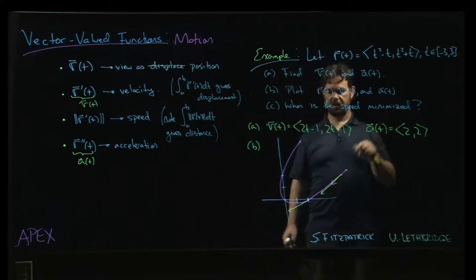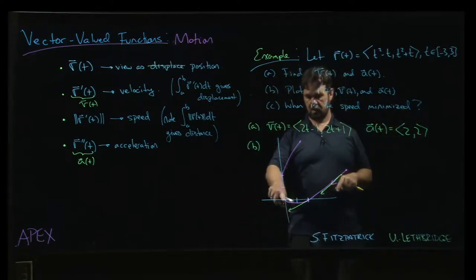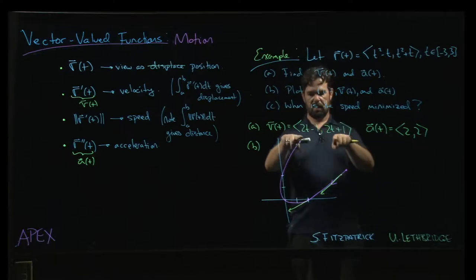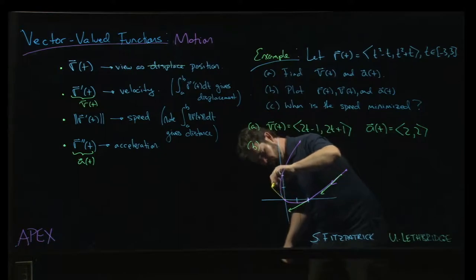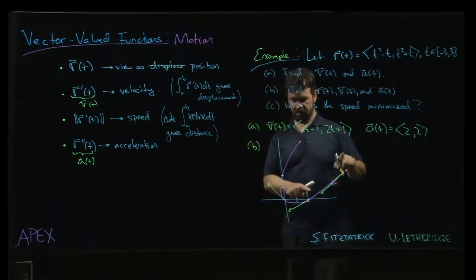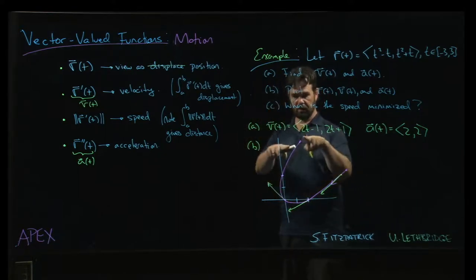And if I do it at, say, t equals 0, we're going to be at the origin. And here I'm just going to have minus 1 plus 1. So that's like so. And again, we can kind of see how it's following the curve, right?